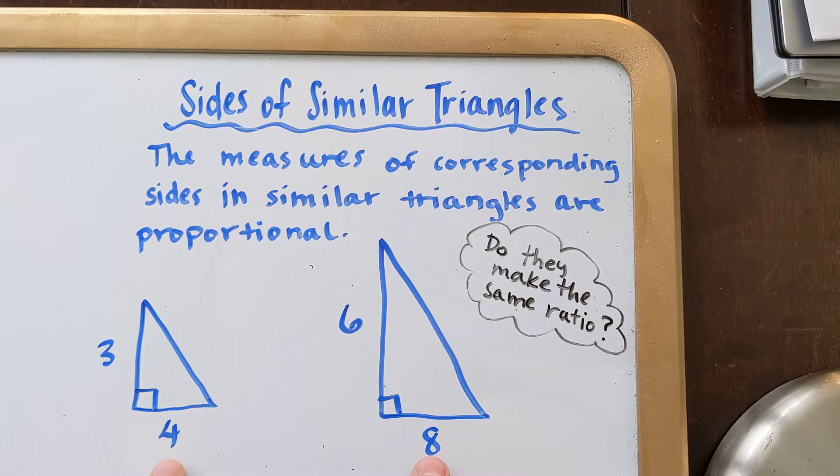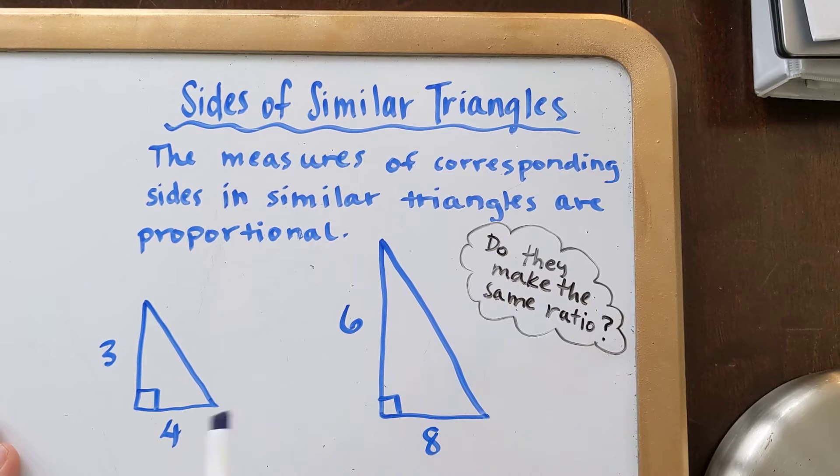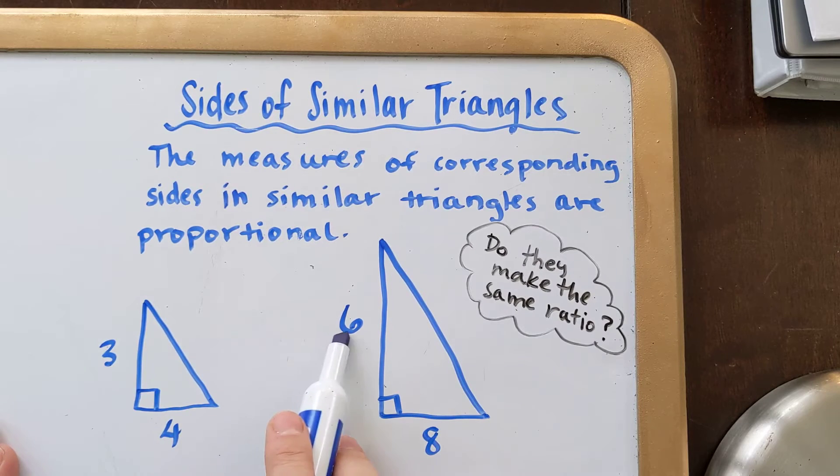The 4 and the 8, those are corresponding. And if we had a measure for these sides here, those would be corresponding. So what we're going to do is we are going to make a ratio out of these two sides, meaning we're going to divide them. And if when we divide these two sides, if that makes the same number as when we divide these two sides, then it is similar.